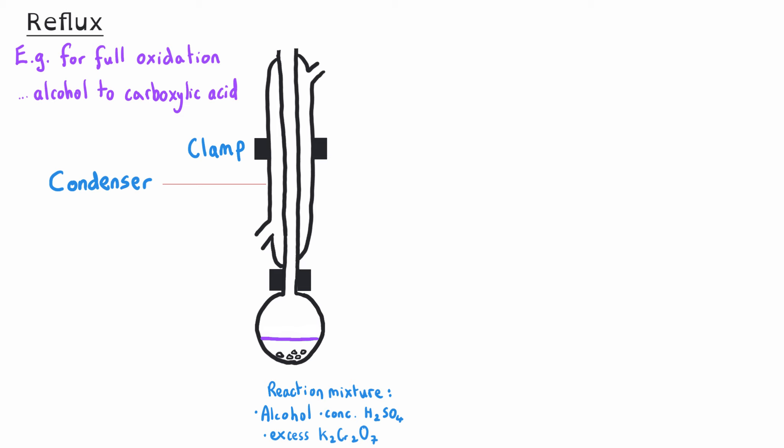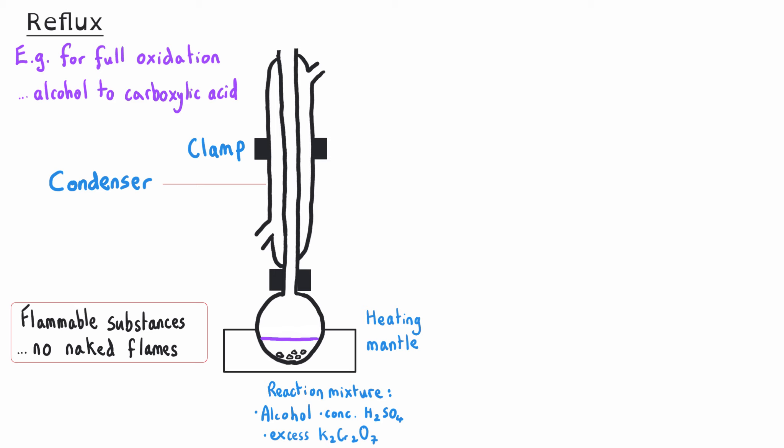The condenser must be in the vertical position and should be clamped, and we should also clamp the reaction mixture to make sure there's no dangerous slipping of the apparatus. When we do the reflux, it's really important that we heat our reaction mixture using some kind of heating mantle, hot plate, or maybe a hot water bath. We must not use any naked flames, because most organic substances are highly flammable.